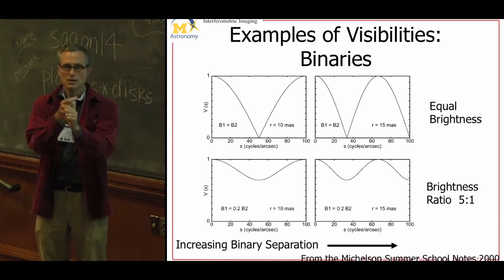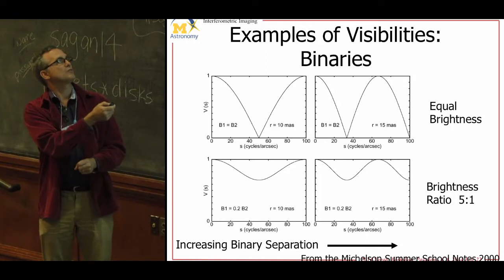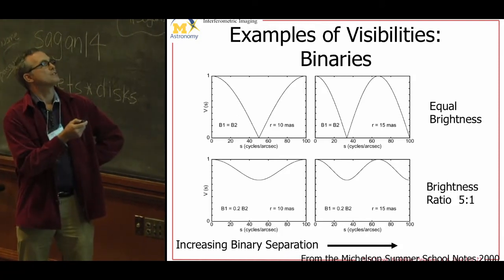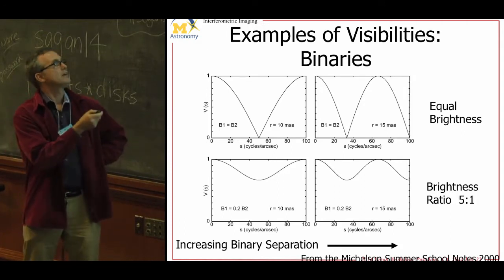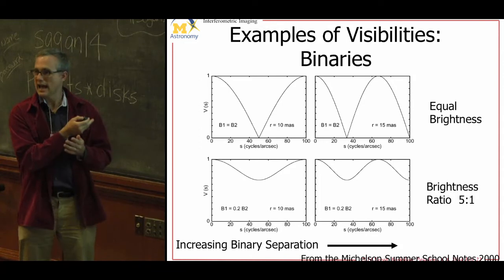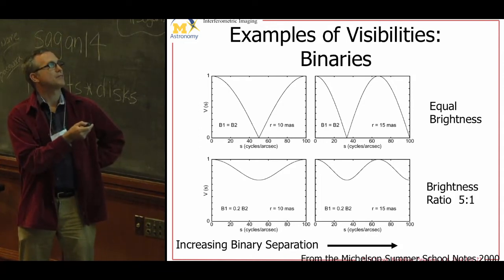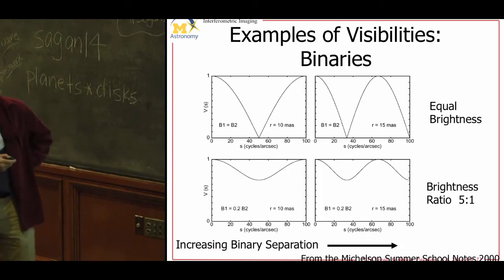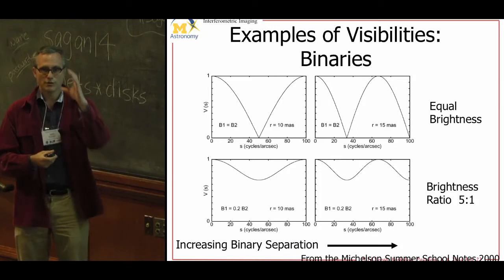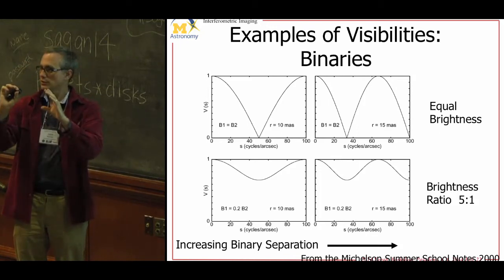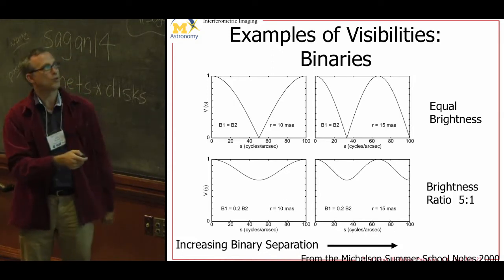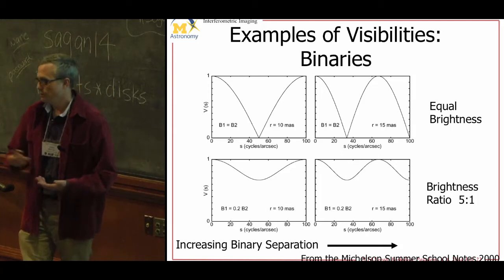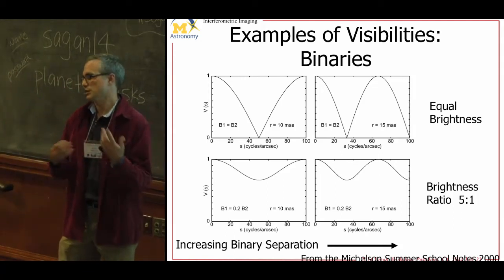A binary star has a very simple visibility curve with baseline. The two components start out unresolved, giving unity visibility — the Fourier transform of a delta function is unity everywhere in the Fourier plane. As you resolve them they start to destructively interfere, going down to zero at exactly half lambda over the baseline, then coming back up to one if they're point sources, repeating until you resolve the star itself. If they're unequal binaries, they can't completely cancel, giving a lower visibility but not zero. By characterizing these curves with just a couple of data points, you can model fit for binary separation, flux ratio, and orientation.